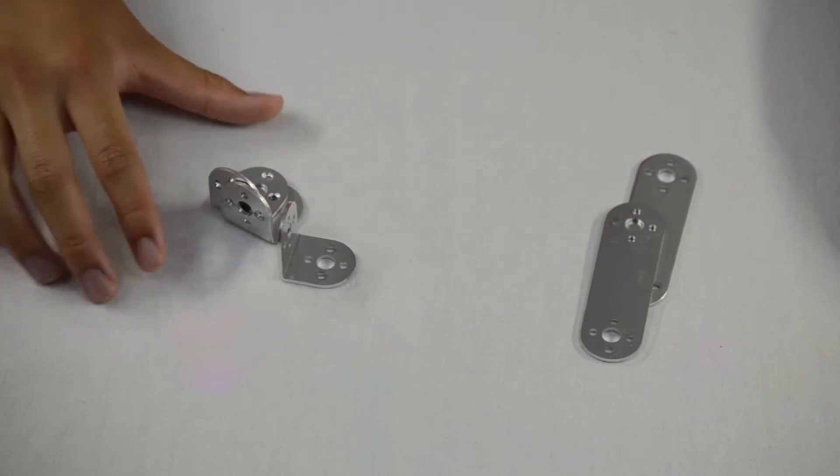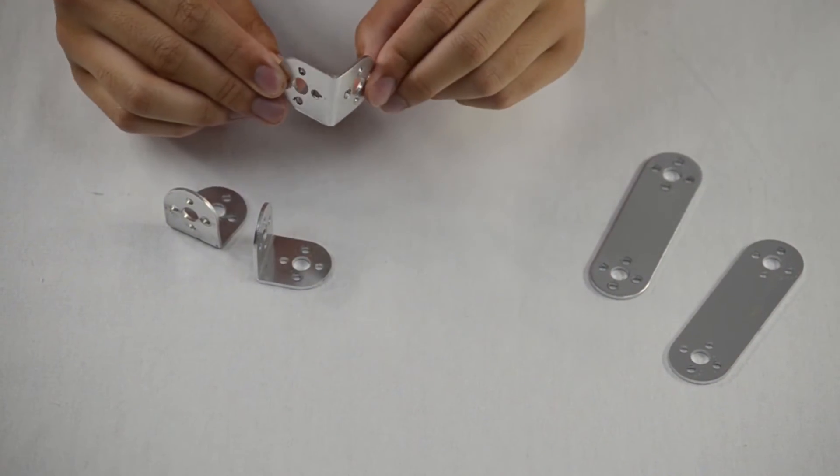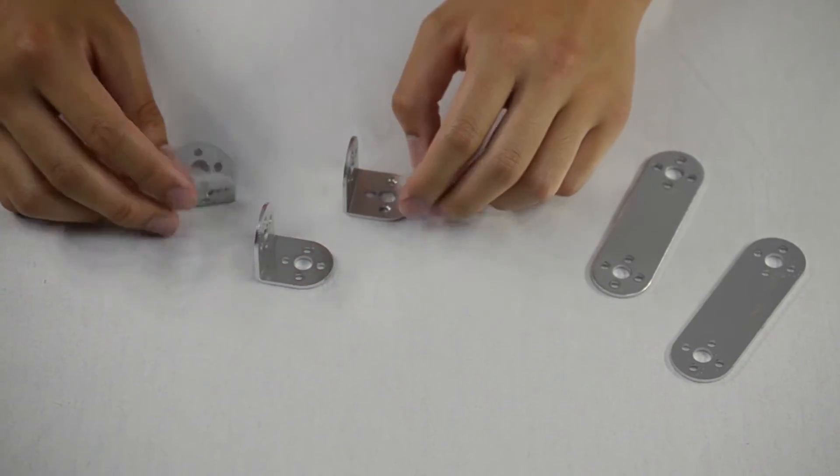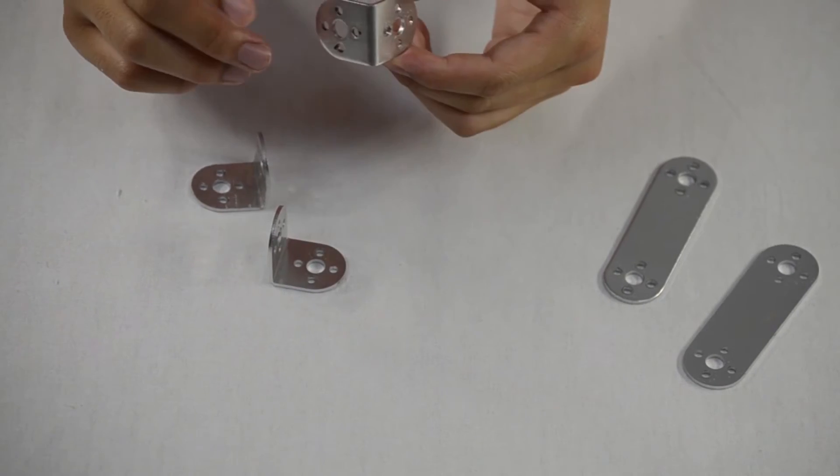Okay, so now we're going to go over the 90-degree angle brackets and the flat brackets. So with your 90-degree angle brackets, these are great for supporting beams that go just straight upwards and also supporting beams that are at a 90-degree angle to each other.